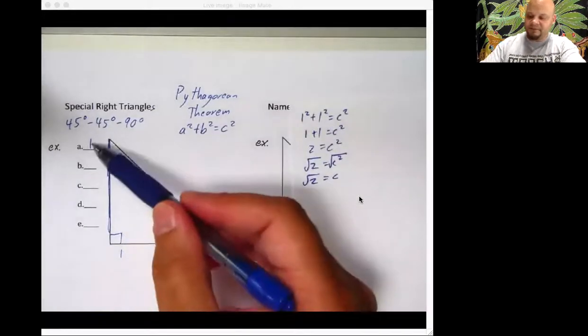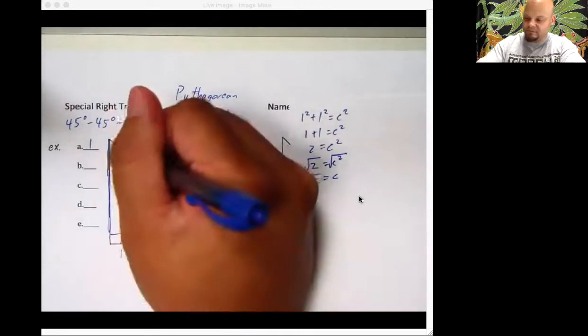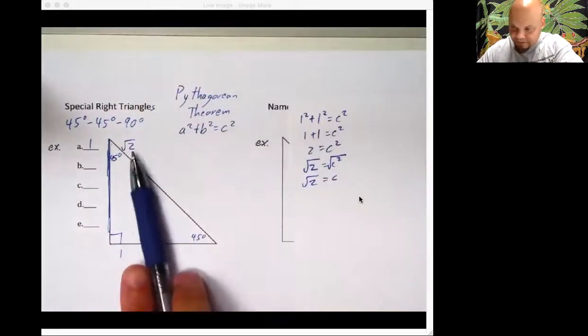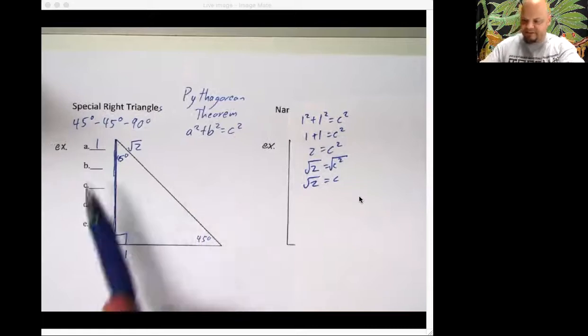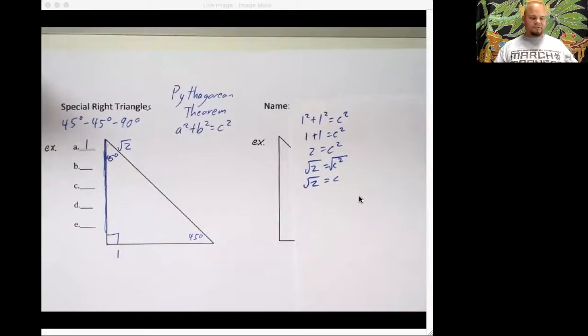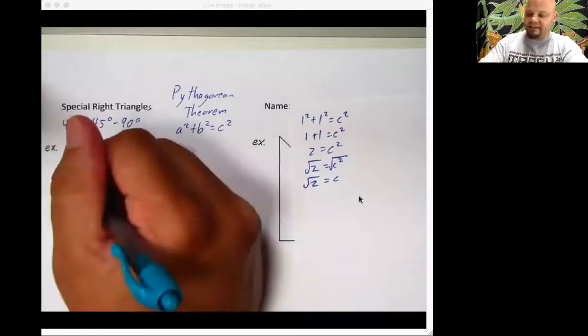So that means when this side's one, this side is root two. This whole side. I know you guys are looking at that I put it right here and I didn't put it on this thing. It's because I have all these other examples to do. So that's why I'm doing that. So quit tripping. Just write it down. Okay, next one.